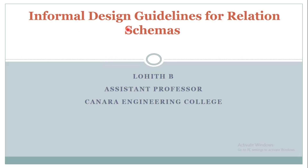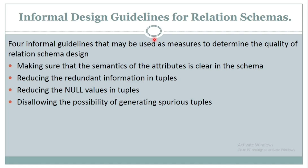Hello all. In this video, we learn about the informal design guidelines for relation schemas. There are four informal guidelines used to determine the quality of relation schema design: making sure that the semantics of the attributes is clear in the schema, reducing the redundant information in tuples, reducing the null values in the tuples, and disallowing the possibility of generating spurious tuples.